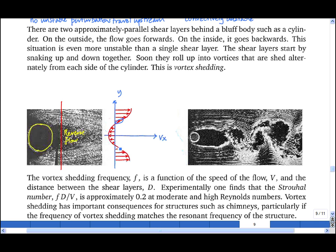Now this flow has two inflection points, one there and one there. And that means that each individual shear layer is unstable convectively. But it also means that there is another instability mode that arises from the interaction of these two shear layers.